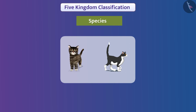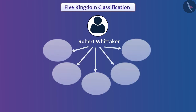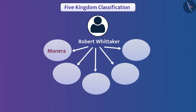Since in a species there are organisms that are very similar to each other and can interbreed, the species cannot be divided further. Hence, species is called the unit of classification. The five kingdoms proposed by Whittaker are Monera, Protista, Fungi, Plantae, and Animalia, which we will discuss in upcoming videos.